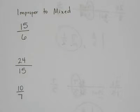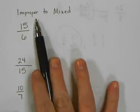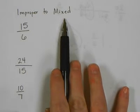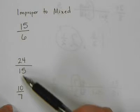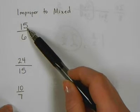This lesson is on changing improper fractions to mixed numbers and mixed numbers back to improper fractions. First thing we're going to look at is changing an improper fraction to a mixed number. So here are three improper fractions. I know they're improper because the numerators are larger than the denominators.